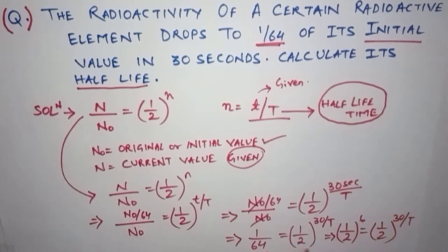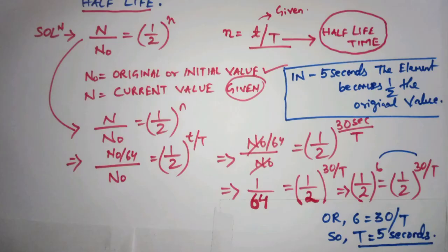LHS is equal to RHS. So now what will we do? We will compare both powers. So that means 6 is equal to 30 by T. And by solving that we will get T is equal to 5 seconds.